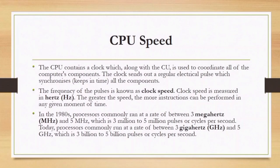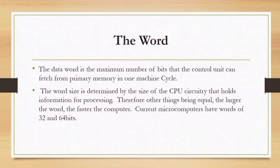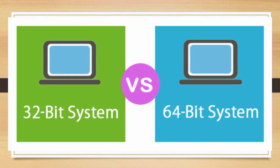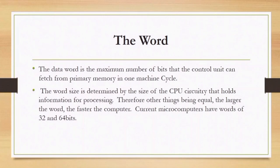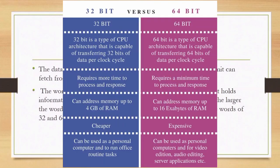The data word is the maximum number of bits that the control unit can fetch from primary memory in one machine cycle. You will notice the computers we have today either use 32-bit or 64-bit architecture. A 32-bit processor fetches 32 bits and a 64-bit processor fetches 64 bits, so the 64-bit fetches a larger amount of data than the 32-bit. If you are going to purchase a computer, choose the 64-bit because it fetches more bits in one machine cycle.